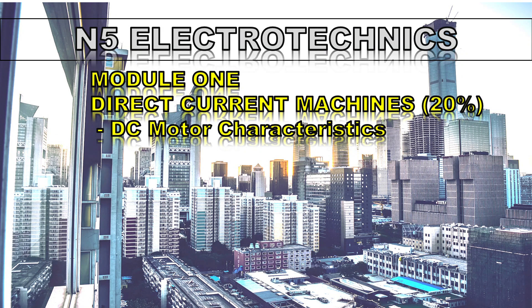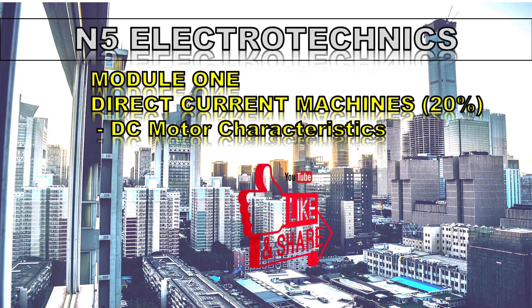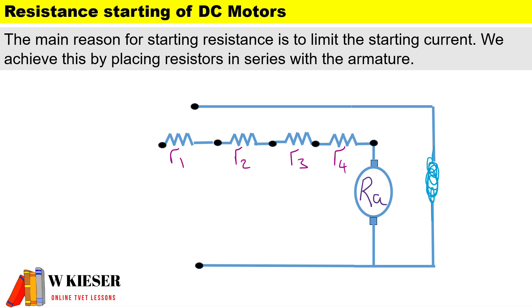Welcome to this video for N5 Electro Techniques. In this video we'll be calculating the resistance starting of DC motors. The main reason for starting resistance is to limit the starting current, and we achieve this by placing resistors in series with the armature.